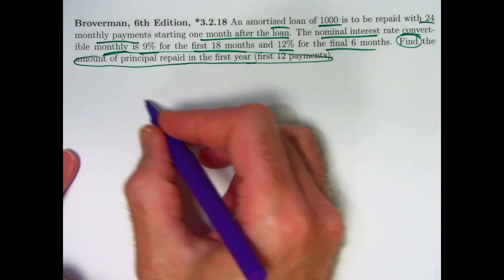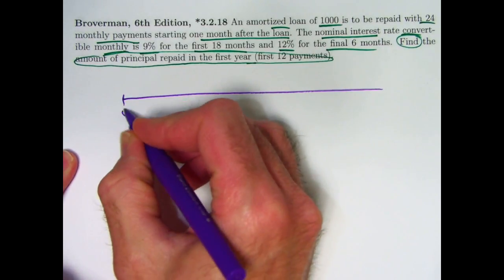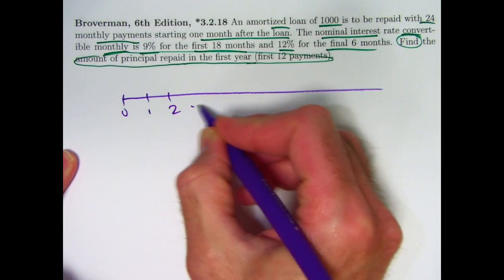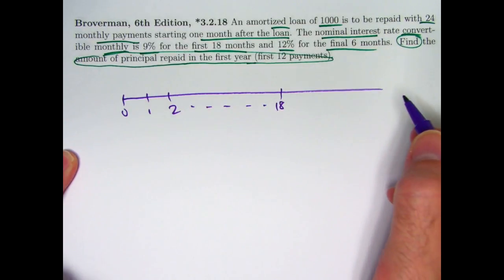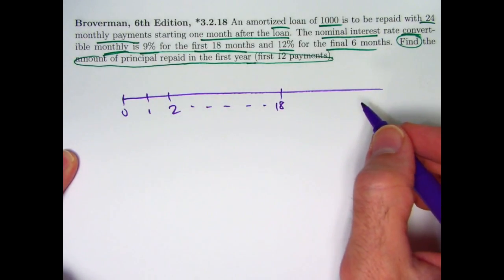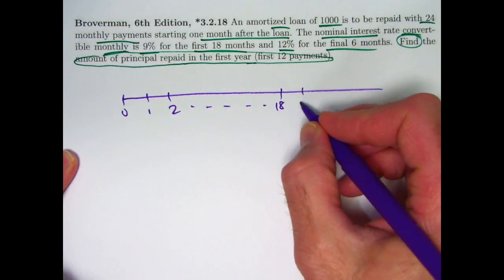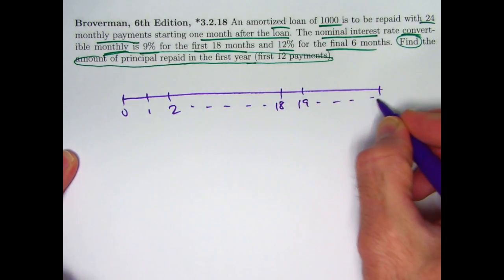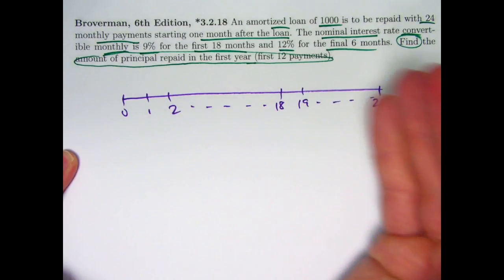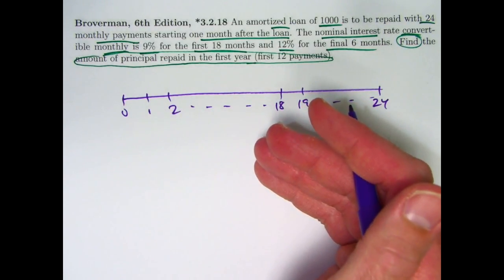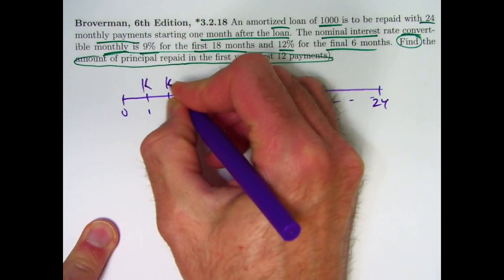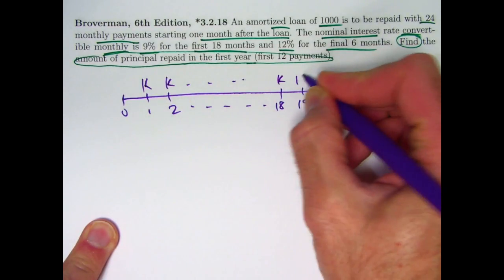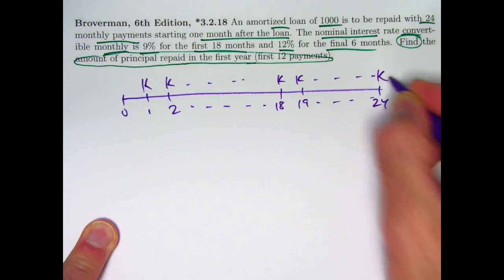Making our timeline. These are going to be months, so we've got the first 18 months being important with the 9% nominal interest rate convertible monthly, and in the last six months we change the interest rate. It doesn't say it, but evidently the payment must be level. Let's call the payment K, as we usually do. Let's assume it to be a level payment.